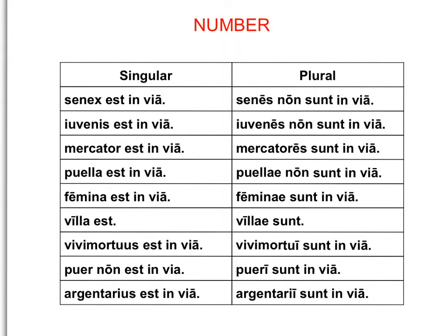So we are talking about how the verb of being changes when we change the number. Previously, as you can see in this column here, we learned that if you want to say one person is something, you use the verb est. Hopefully we notice est as the common denominator in all of these sentences. Est, of course, is the third person singular of the verb of being.